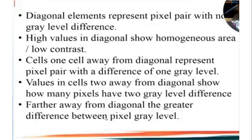In the normalized gray level co-occurrence matrix, diagonal elements represent pixel pairs with no gray level differences — high values in the diagonal show a homogenous or low-contrast area. One cell away from the diagonal represents pixel pairs with a difference of one gray level. Values in cells two away from the diagonal show how many pixels have a two gray level difference. Further away from the diagonal, the greater the difference between pixel gray levels.